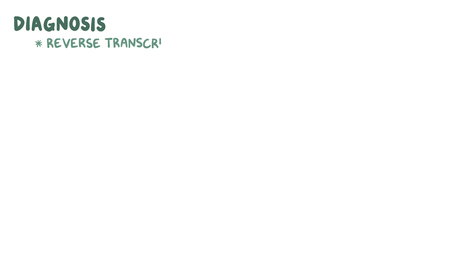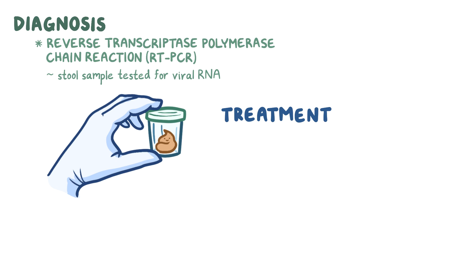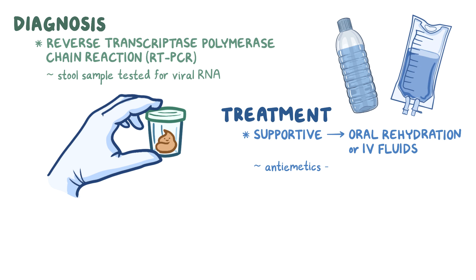Diagnosis of norovirus infection can be done with reverse transcriptase polymerase chain reaction, or RT-PCR, where a stool sample is tested for viral RNA. Treatment of norovirus is mostly supportive, with oral rehydration or IV fluids. Additionally, anti-emetics can be used to control vomiting.